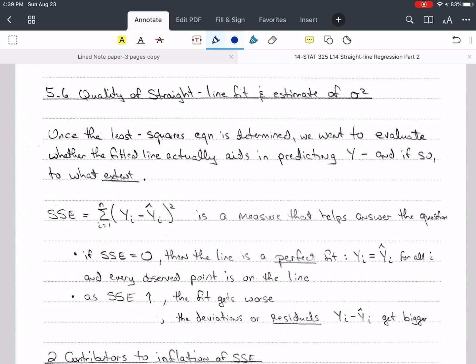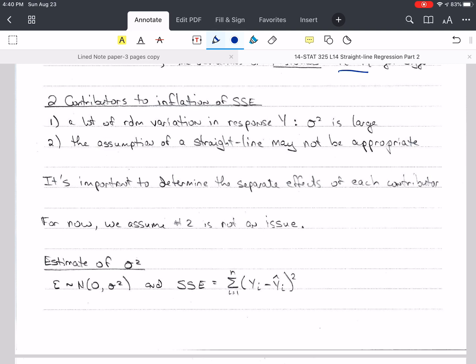Now let's talk about how we assess the quality of the straight line fit, and we're going to use that same measure to estimate sigma squared. So once we have the least squares equation, we want to evaluate whether the fitted line actually does aid us in predicting y. And if so, to what extent? Remember our questions had to do with extent, and so we're still going to do that. So we have our definition of SSE here, and this is the measure that helps us answer that question. Of course, if SSE is zero, then the line is a perfect fit. In other words, yi is equal to yi hat for all i, and every observed point is on the estimated line. But as SSE increases, the fit gets worse. In other words, the deviations or residuals get bigger.